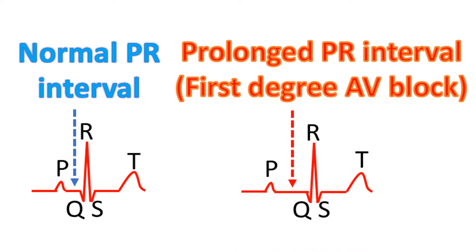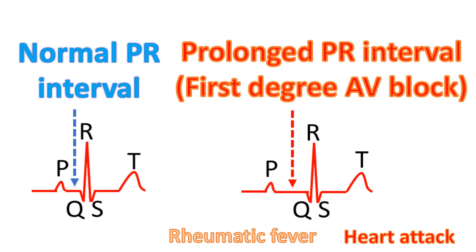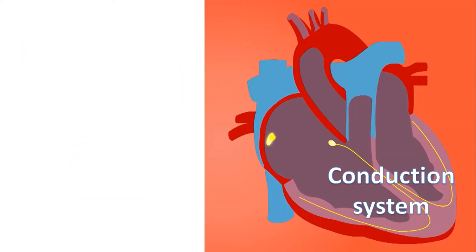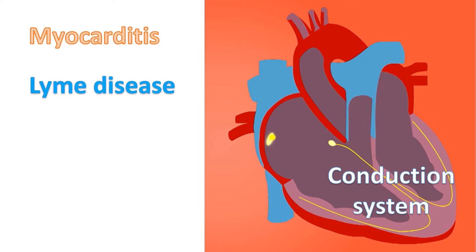First degree AV block can sometimes be a manifestation of diseases like rheumatic fever, a disease which affects predominantly the joints and the walls of the heart. It can also occur in a heart attack involving the lower part of the heart, known as inferior wall myocardial infarction. Other causes include inflammation of heart muscle known as myocarditis, Lyme disease caused by a bacterial infection, and some medications which slow the electrical conduction of the heart, typically given to control heart rhythm abnormalities.